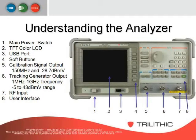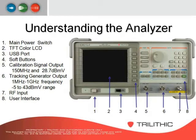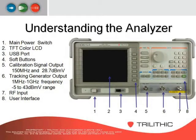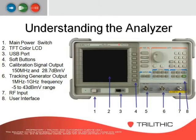You have your soft keys — when your display is illuminated, the soft keys have different things you can select from that take you into different options. You also have a cal-out, which is the calibration signal output. On the 8821QR it puts out a 150 MHz signal at 28.7 dBmV. This allows you to keep your analyzer calibrated by running a known signal source back into the analyzer.